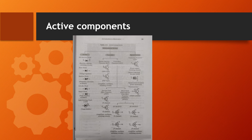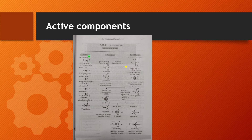Now, a list of active components will be shown. Active components are classified as diodes, transistors, and special devices. Under diodes: PN junction diode, Zener diode, varactor diode, Schottky diode, tunnel diode, and light-emitting diode — all are active components.